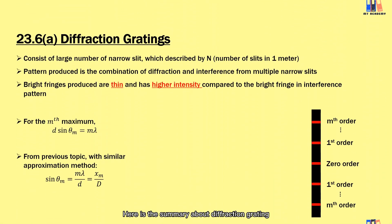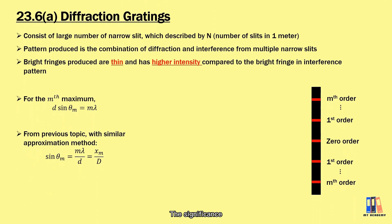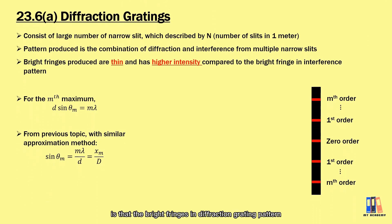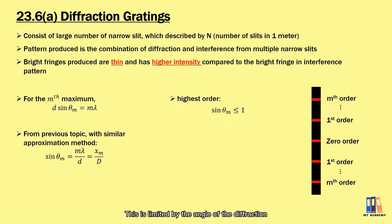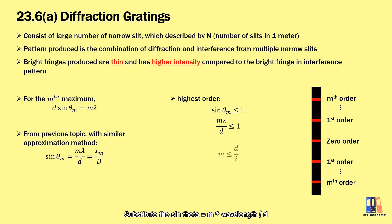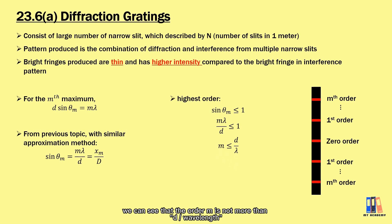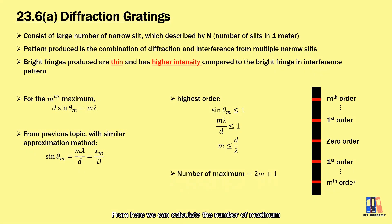Here is the summary about diffraction grating. The significant difference compared to the interference pattern is that the bright fringes in the diffraction grating pattern have smaller width and higher intensity. Another thing to note is the highest order that can be observed. This is limited by the angle of diffraction, where sin θ cannot be more than 1. Substituting sin θ = mλ/d, we see that the order m is not more than d/λ. From here, we can calculate the number of maxima, which equals 2m + 1.